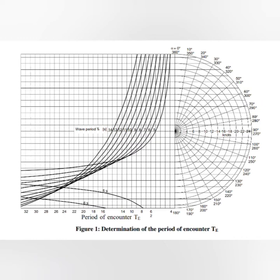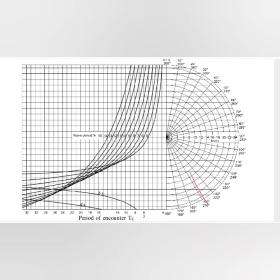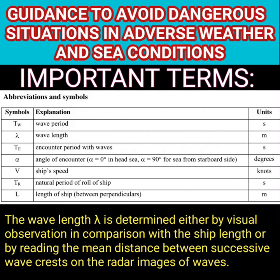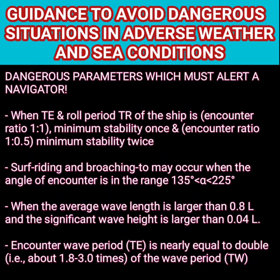On the right-hand side of the diagram, certain angles of encounter of the wave are given, and your ship's speed is given on the x-axis. Once you compare these two and project it to the wave period on the left side and bring it down, you receive the period of encounter. The angle of encounter is denoted by alpha: if the sea is from ahead it is alpha zero degrees, from the starboard side it is 90 degrees, and a quartering sea from astern is 180 degrees. Ship speed is denoted by V, the natural roll period by Tr, and L is the length between perpendiculars.